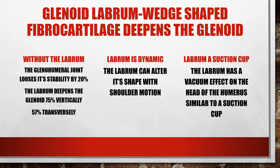The labrum is dynamic — it can actually change its shape with motion, which is key if it's healthy. An unhealthy labrum can result from disease, metabolic problems, lack of hydration, or chronic wear and tear causing scar tissue. A classic example is a pitcher who externally rotates the shoulder repeatedly under stress. The labrum also acts like a suction cup, creating a vacuum effect to help hold the humeral head in place.